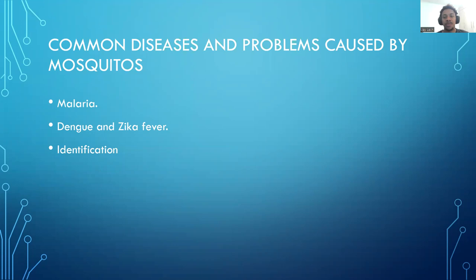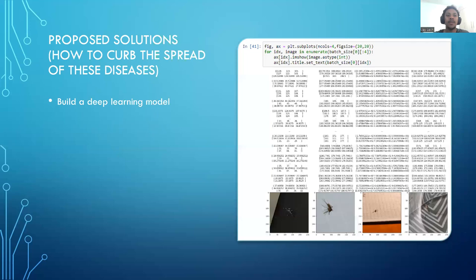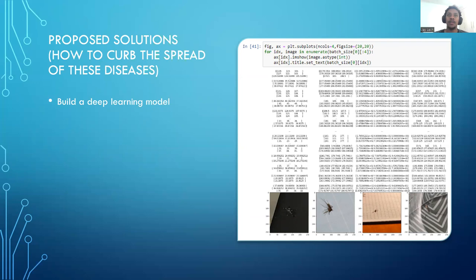My proposed solution is to build a deep learning model that will be trained using a large number of images. My dataset had about 10,000 images. We're going to use those images to train, test, and validate — 70% of the images to train, 20% for testing, and 10% for validation. That's the proposed solution for this project.